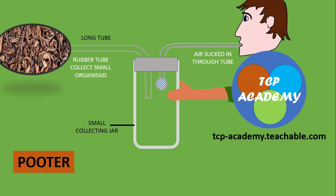This gives us a simple setup of a pooter. We are seeing the long tube here pretty much in the vicinity of the organism to be collected. There is a rubber tube going to the mouth — the shorter tube — and another rubber tube which is the longer tube. When you suck in this tube, air moves in that direction, causing organisms to be pulled into the bottle. The muslin here acts like a mesh to prevent the organism from being pulled into the mouth.